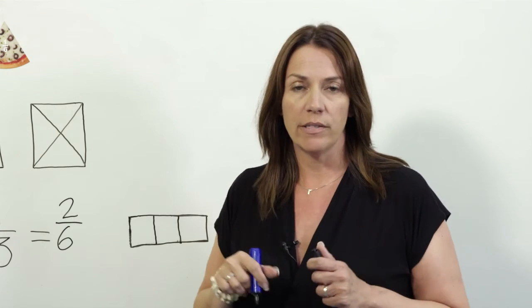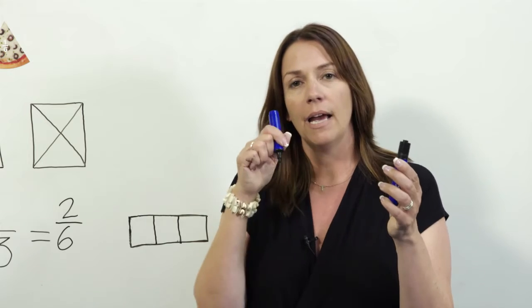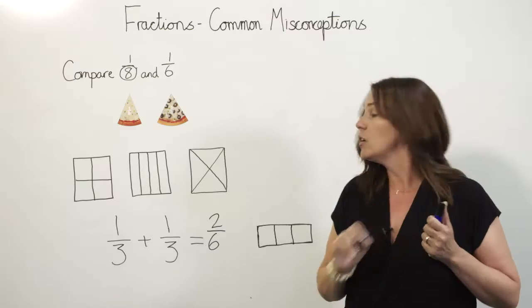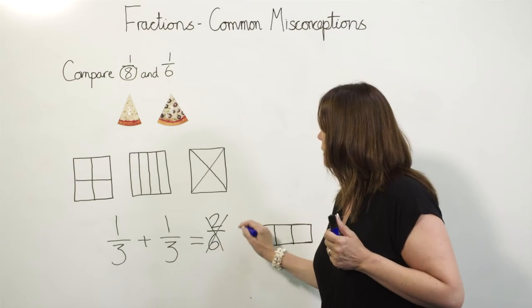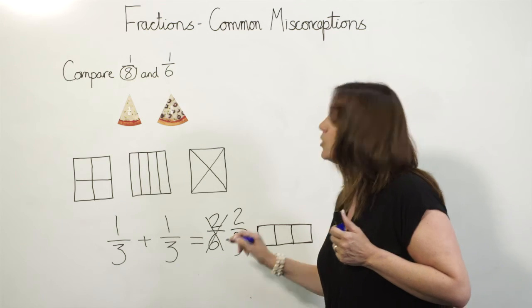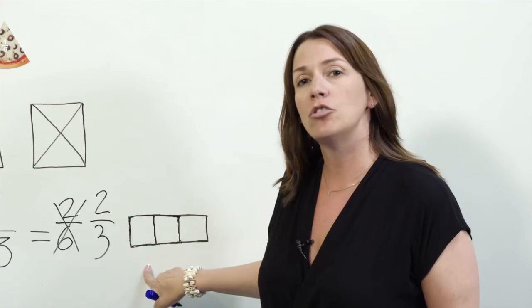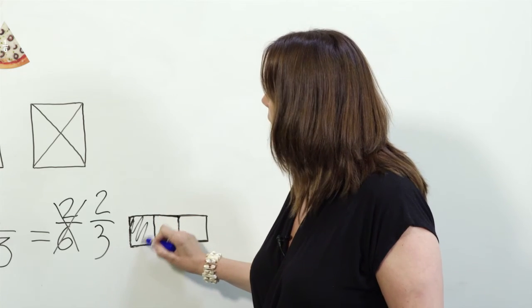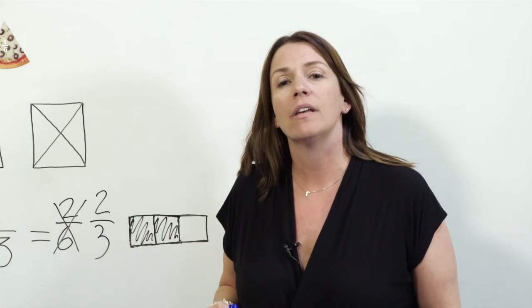So get your pupils to think about it like this: 1 pen add 1 pen is 2 pens. So 1/3 add 1/3 is 2/3. You can also do this with a bar model to show that 1/3 add 1/3 equals 2/3.